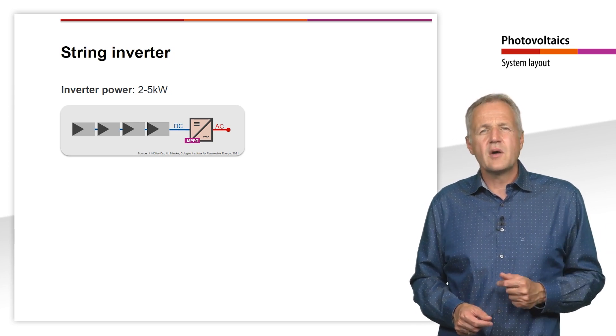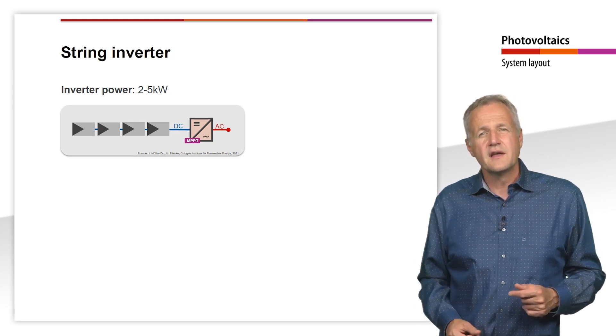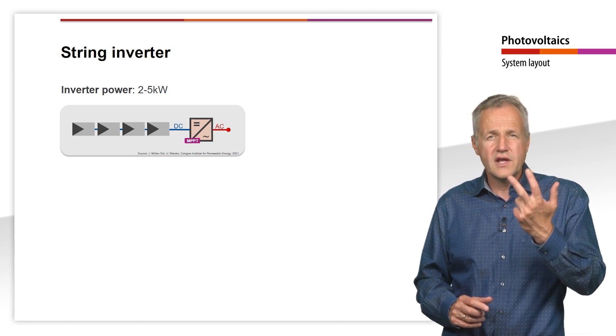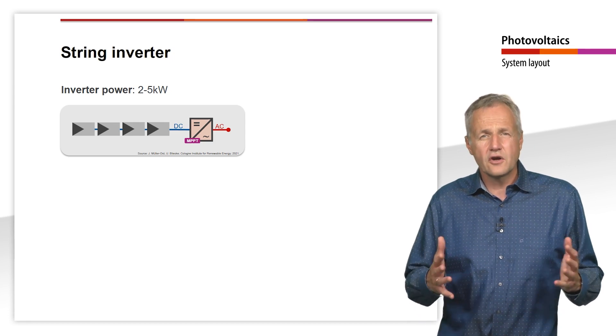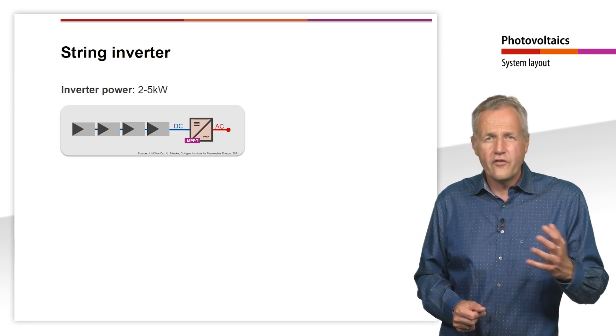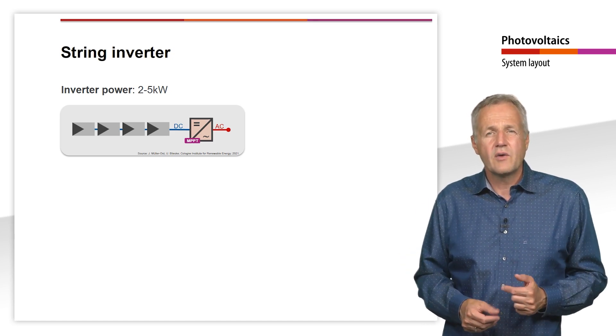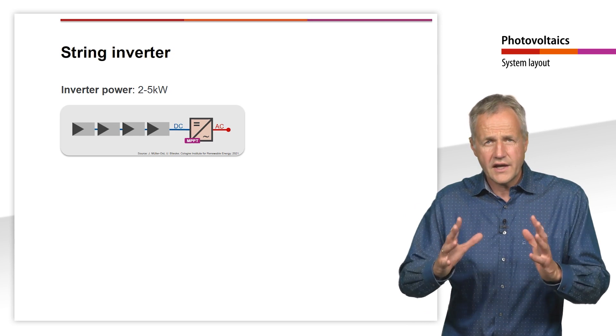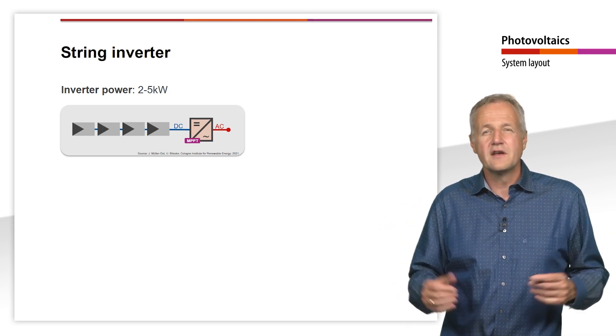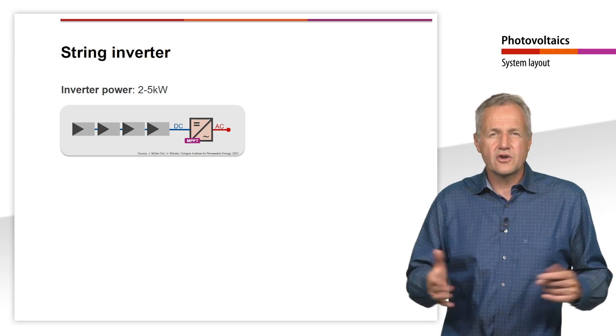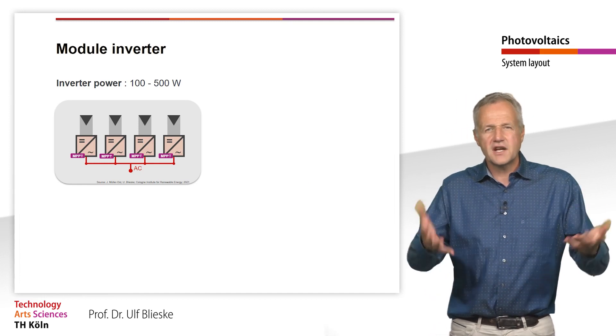A typical solar module has an MPP voltage of about 34 to 40V. Therefore, in very small systems with three or fewer modules, the critical voltage of 120V is not reached. So no further safety precautions need to be taken. As we have just seen, when planning a system with a string inverter, it is important to ensure that all modules of a string are oriented similarly and that no or only short-term shading occurs. If different orientations or shading cannot be avoided, it may be a good idea to use a module inverter.